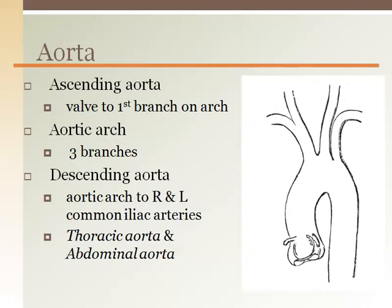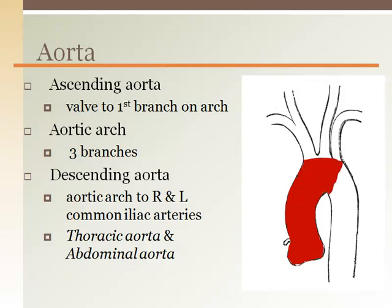Blood leaving the left ventricle goes out to the body through the aorta, which makes a hairpin turn in the first six inches. The first few inches going straight up is called the ascending aorta. The sharp corner is called the aortic arch, which has three branches. After the last branch off the arch, the aorta goes straight down — this is called the descending aorta. The part above the diaphragm can also be called the thoracic aorta, and below the diaphragm it is called the abdominal aorta.